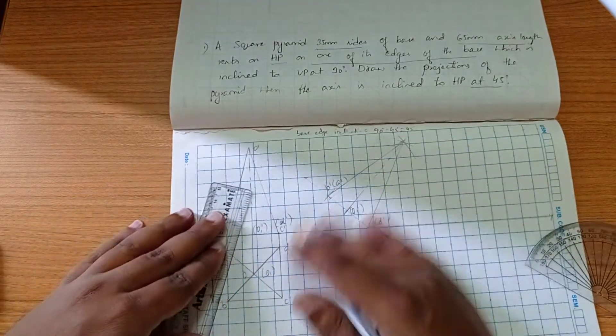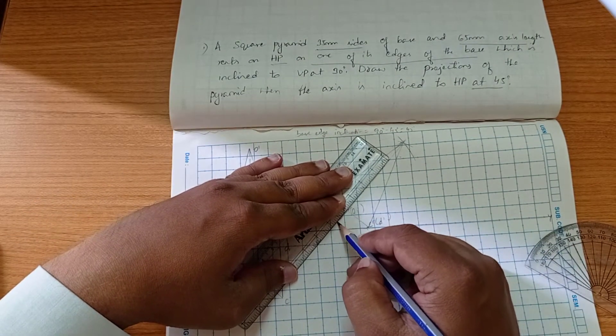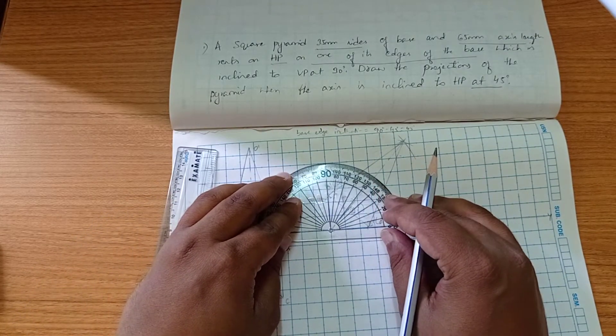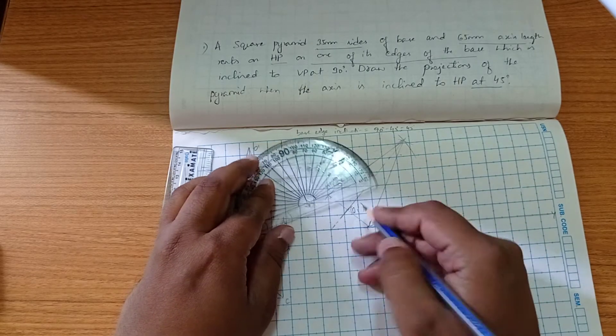We have this axis, so we have to put one axis here. By extending this axis, if you measure the angle, that will be exactly 45 degrees.